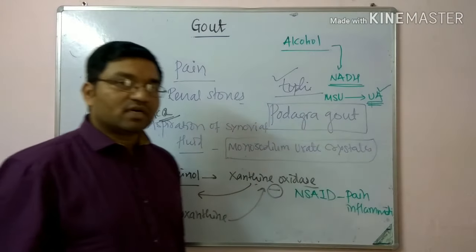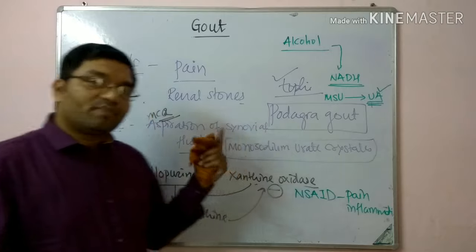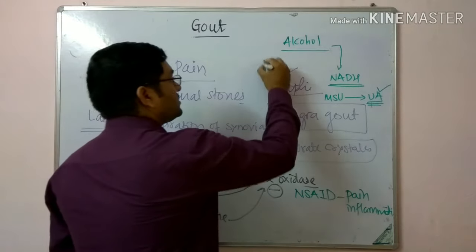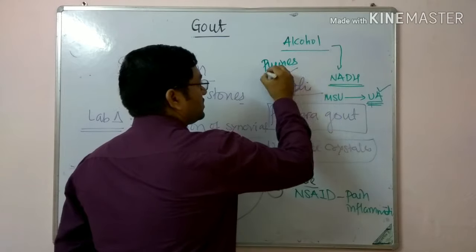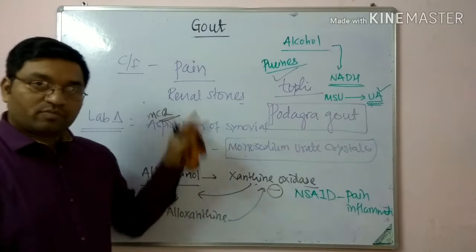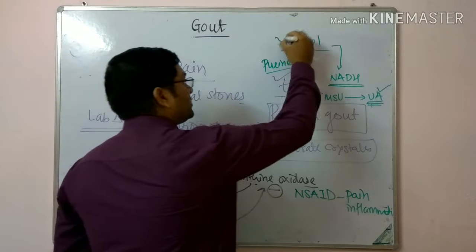One important reason why alcohol precipitates an attack of gout is that alcohol leads to the production of NADH. This NADH converts monosodium urate into uric acid, which is the less soluble form, precipitating the attack of gout. Additionally, some preparations of alcohol contain purines, which also precipitate gout. These are the two reasons why alcohol precipitates gout.